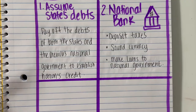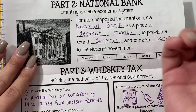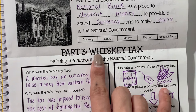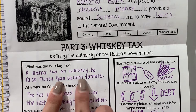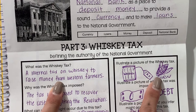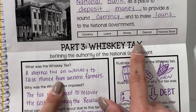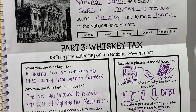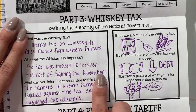Now let's look at part three, which discusses the whiskey tax. Hamilton believed we needed to create a stable economic system by bringing in revenue. So in order to start collecting money for the national government, they imposed a tax on whiskey. The whiskey tax is an internal tax on whiskey to raise money. Western farmers were mainly affected because whiskey is made out of corn, and Western farmers would grow corn. Instead of transporting corn to the East Coast, they would make it into whiskey because it was easier to transport. The tax was imposed to reduce the national debt from the American Revolution.